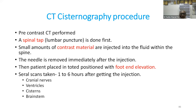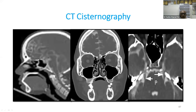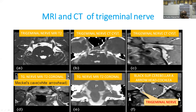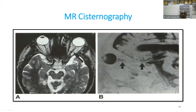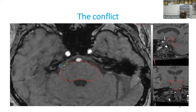CT cisternography is a procedure where contrast is injected into the spinal canal through spinal puncture, with foot elevation to visualize cranial nerves, ventricular systems, and the brainstem. For trigeminal neuralgia, MR cisternography can show the vascular conflict between the artery and the trigeminal nerve very clearly. MR cisternography is also useful for CSF leak planning.